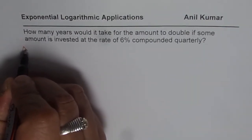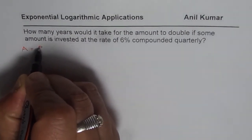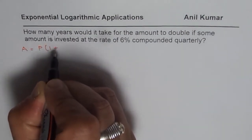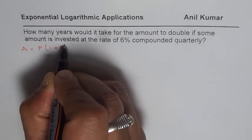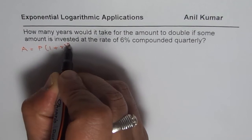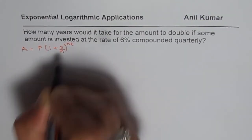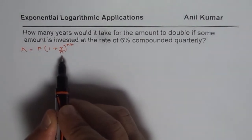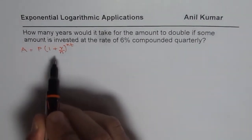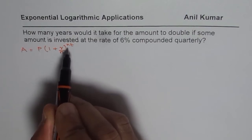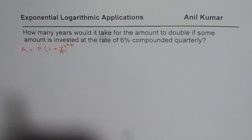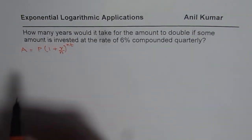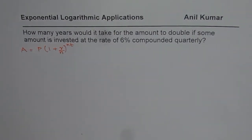The general formula for the amount is: A equals principal P times 1 plus rate of interest R over N, to the power of N times T. We divide the rate of interest by N where we are compounding more than once in a year. The compounding period becomes N, and therefore the rate of interest will be divided by N, and the exponent is N times T where T is the number of years. That is the formula for the amount under compound interest.